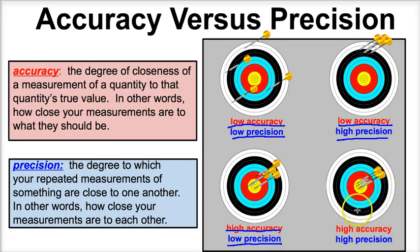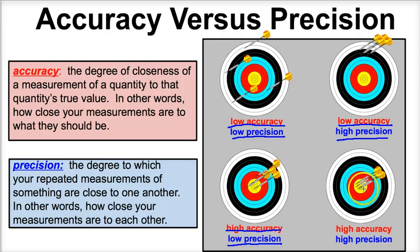Last but not least, this is what we're striving for in measurement. We want our measurements to be very close to what they should be — all four darts are in the bullseye, that's where they should be. And we want our measurements to be very close to each other. If we were to do four different trials measuring something and they all ended up very close to one another, that's what we're striving for. So we have high precision and high accuracy.